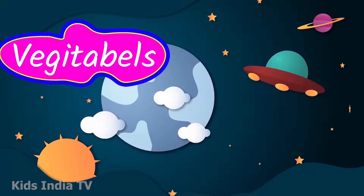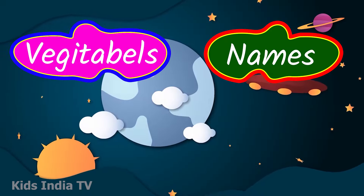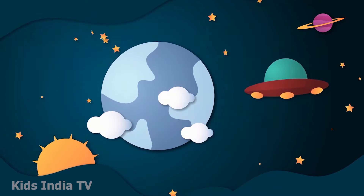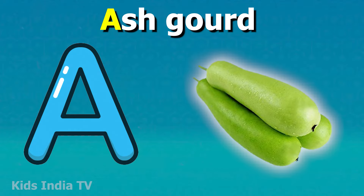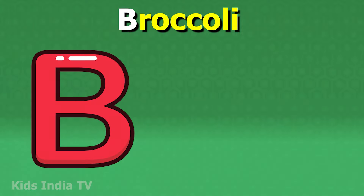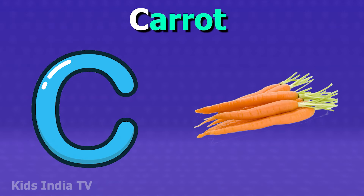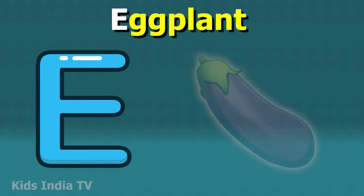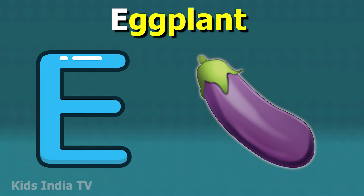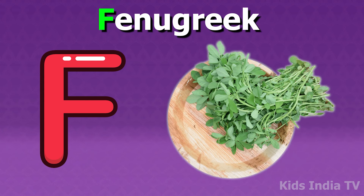Vegetable names according to alphabets: A for ash gourd, B for broccoli, C for carrot, D for drumstick, E for eggplant, F for fenugreek.